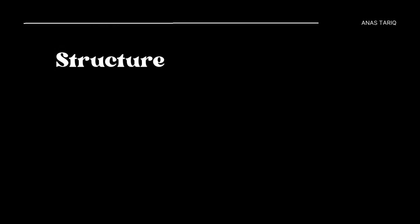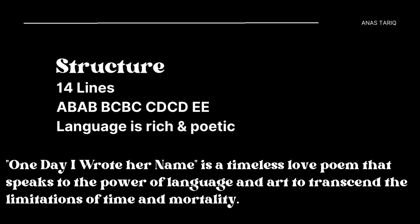The poem is structured as a sonnet with 14 lines and the rhyme scheme is ABAB BCBC CDCD, and the last couplet is EE. The language is rich and poetic, with a number of literary devices employed to create a sense of beauty and pathos.